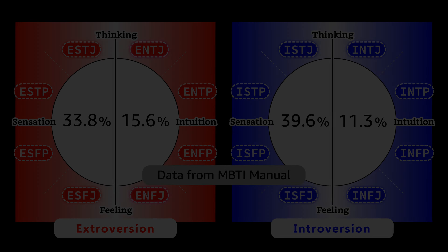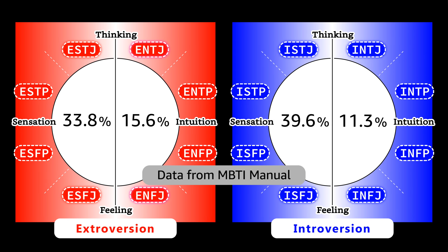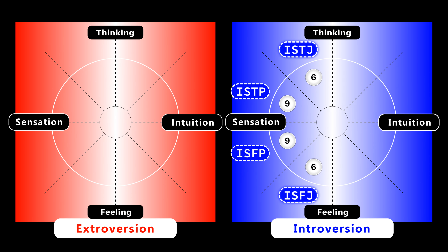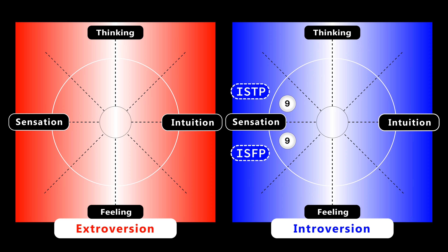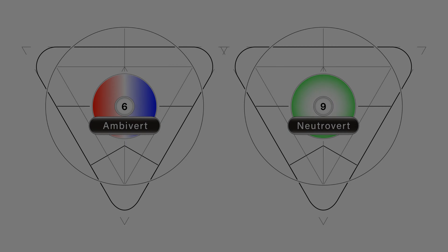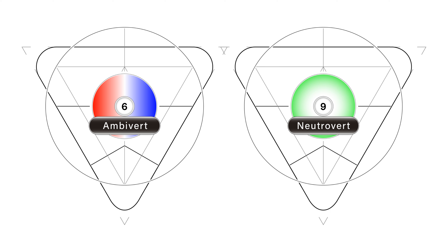IS types: as we can see in this figure, the percentage of IS types is the biggest — that is 39.6%. IS types are mainly represented by Type 6 and Type 9. Type 6 tends to be a judging type, and Type 9 tends to be a perceiving type. In this section, we have discussed the ambivert of Type 6 and the neutrovert of Type 9.